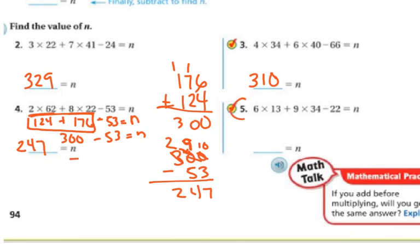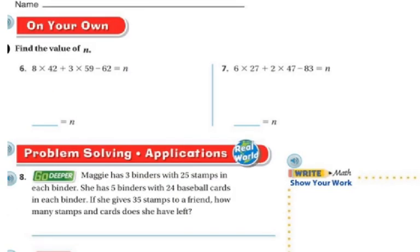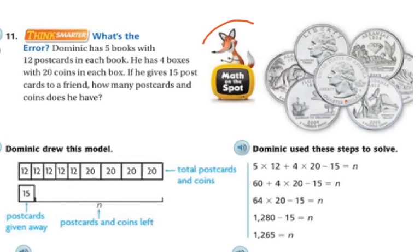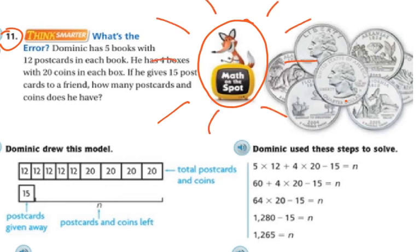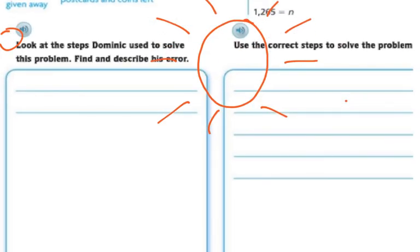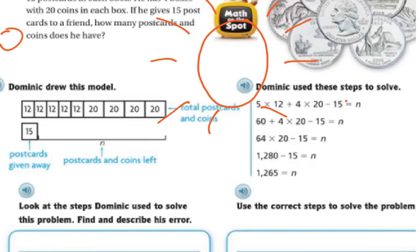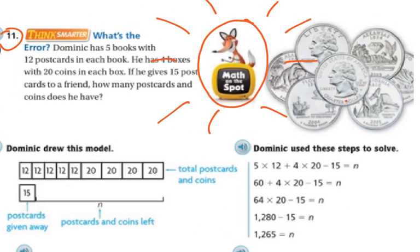I'm going to have you do problem number 5 on your own. I want you to watch the Math on the Spot video and do problem number 11. Go to Think Central, watch the Math on the Spot video, and complete this whole problem. I will be on the carpet if you need me. You can also choose to work with a partner. Good luck.